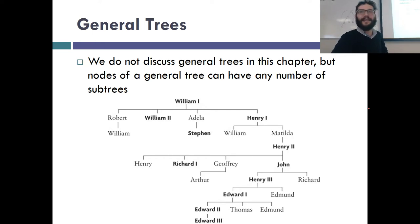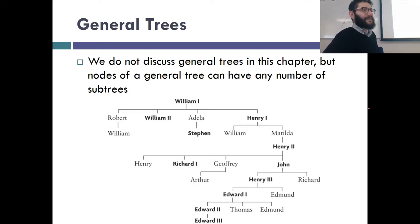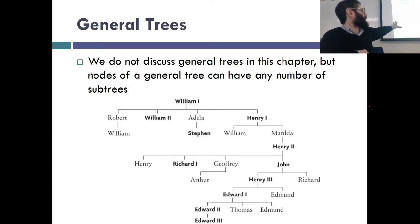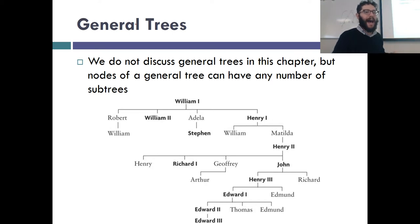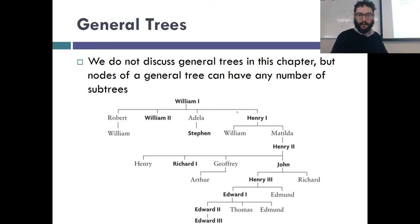The textbook says we're not discussing general trees this chapter, but we actually are briefly. You can make not just binary but trinary, quaternary, or any-ary trees. We can convert general trees to binary trees. Here's an example using the English monarchy — a tree where each node may have many children.